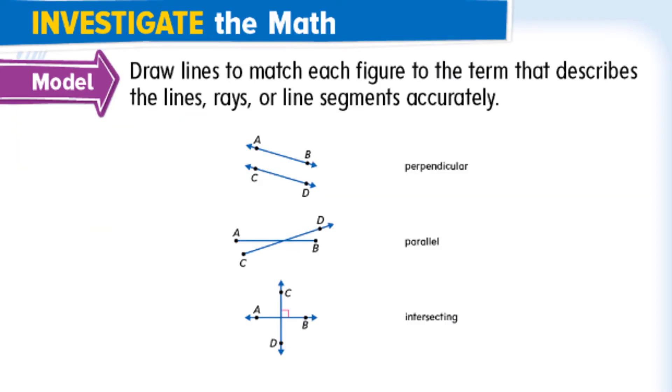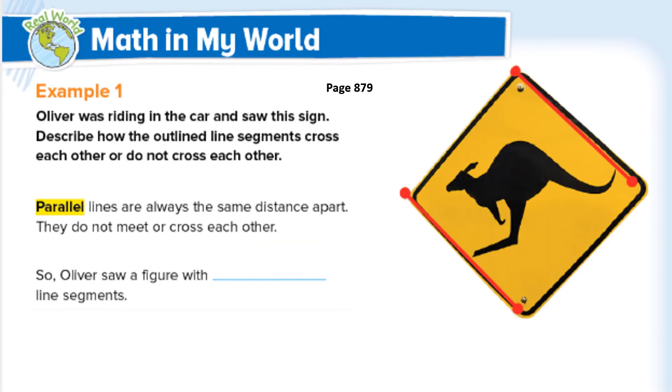So I want you to look at these three sets of lines and then decide how should they be labeled. Here we go. This one, the top AB and CD are parallel. The middle group of a ray and a line segment are intersecting and the bottom lines are perpendicular because they form a right angle there.